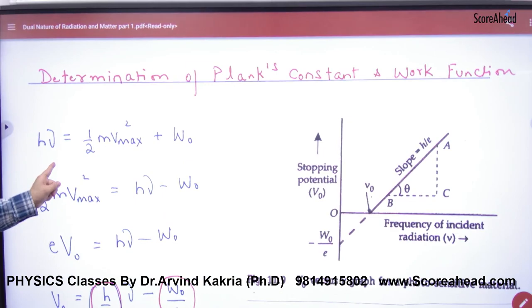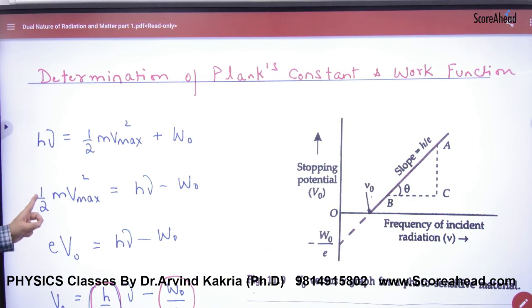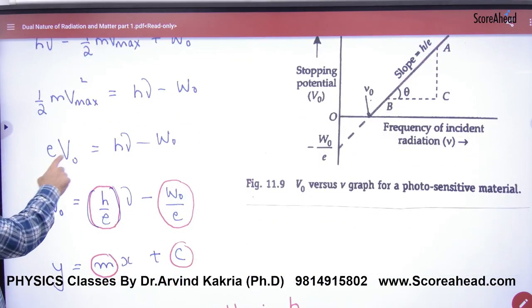Write Einstein's equation. Write photon energy, write kinetic energy of electron. You can write eV₀. Let's divide by E.